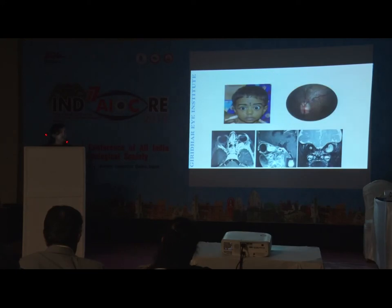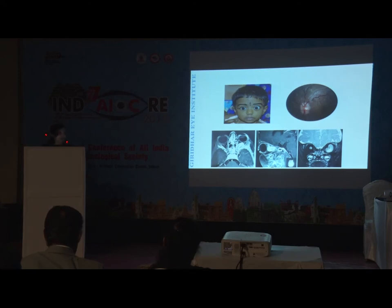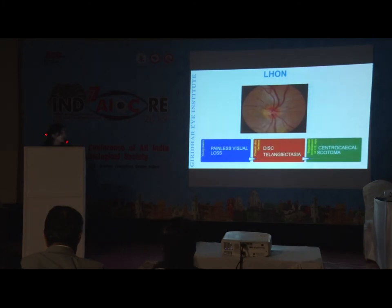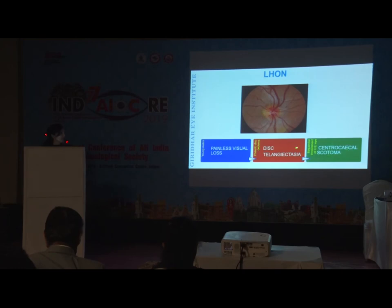Glioma is seen in younger patients presenting with proptosis and sometimes exotropia; they may not realize defective vision early. Early stages show disc edema, later pallor. The optic nerve is fusiformly and uniformly enlarged, unlike the meningioma appearance. In a young patient also consider Leber's Hereditary Optic Neuropathy (LHON), which presents like optic neuritis but with painless visual loss. Disc telangiectasia gives the clue of pseudo-disc edema. There is a high chance of sequential fellow eye involvement and limited treatment options, though genetic studies are ongoing.